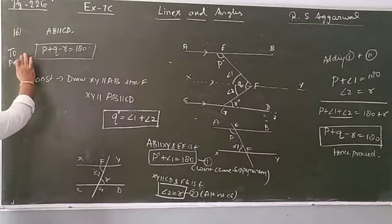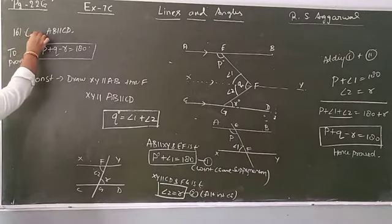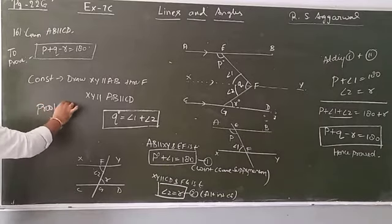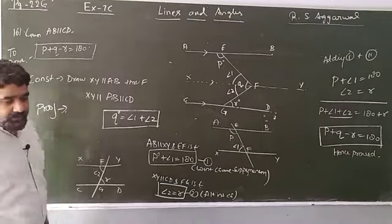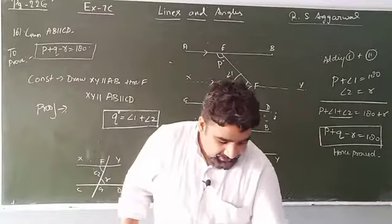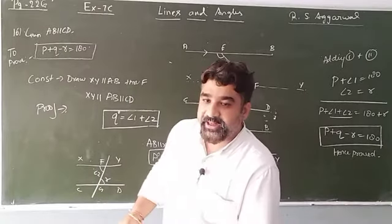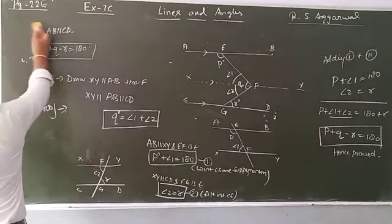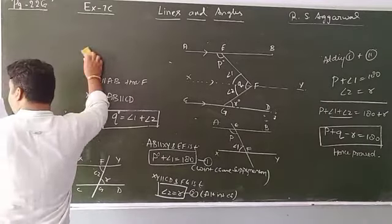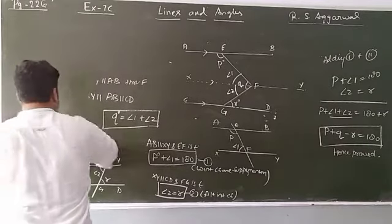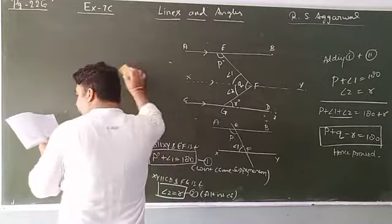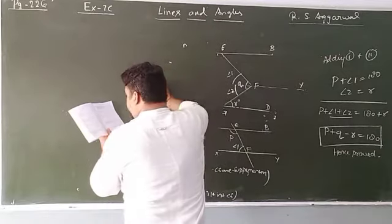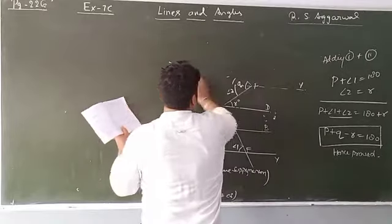So it's a very easy question. Remember to write: given, to prove, construction, and proof. Now let's look at question number 17. The more you understand the figure, the easier the solution will be. AB is parallel to CD, EF is parallel to GH, and we have to find the value of x, y, z, t.